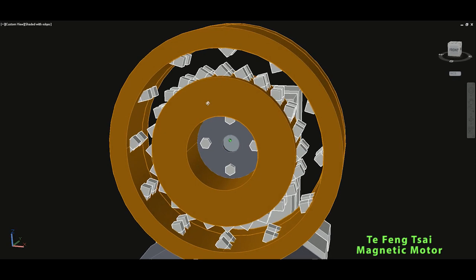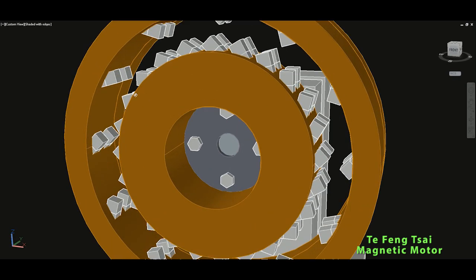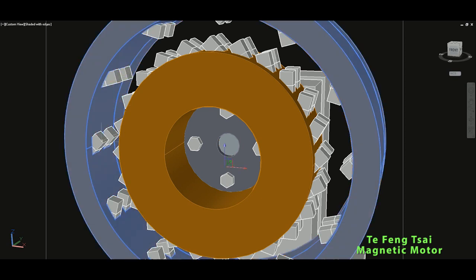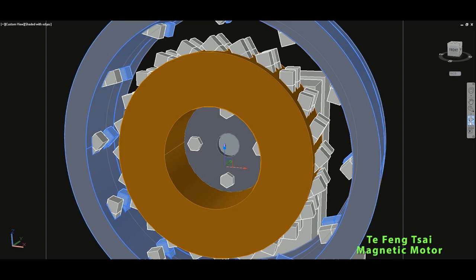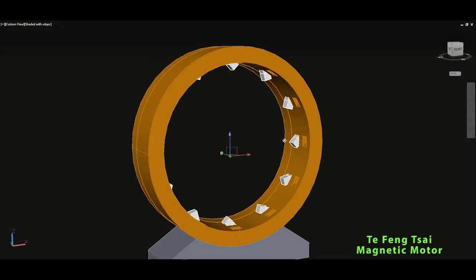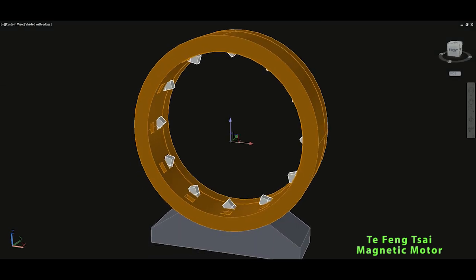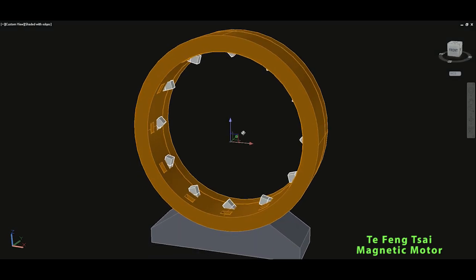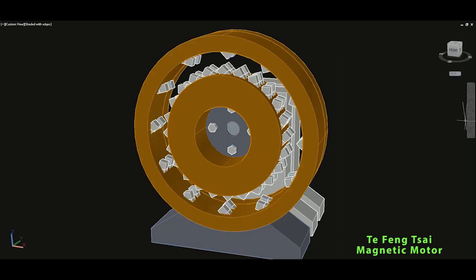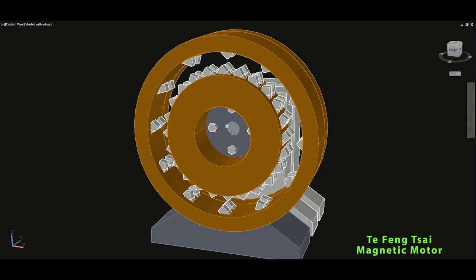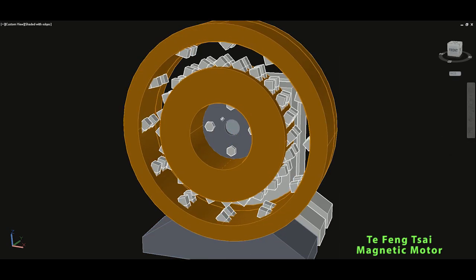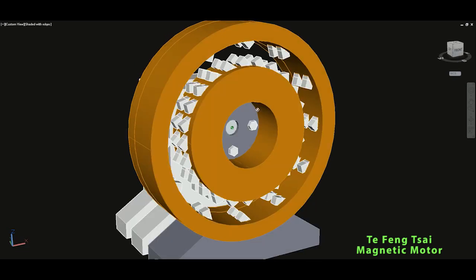Only thing else what I saw in the patent is that these stator magnets should be double strength or twice stronger than the magnets on the rotor. So this is the only what I have found in the patent that is described. It doesn't matter which type or size, but the magnets on the stator should be stronger than the magnets on the rotor.